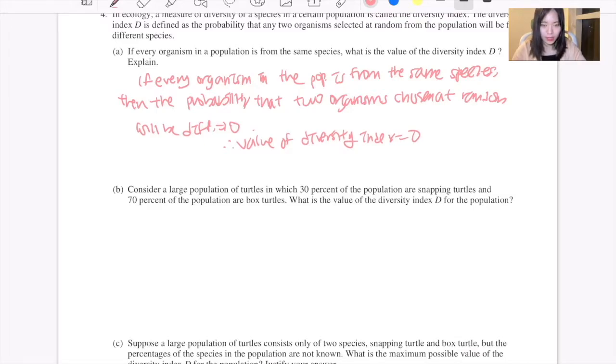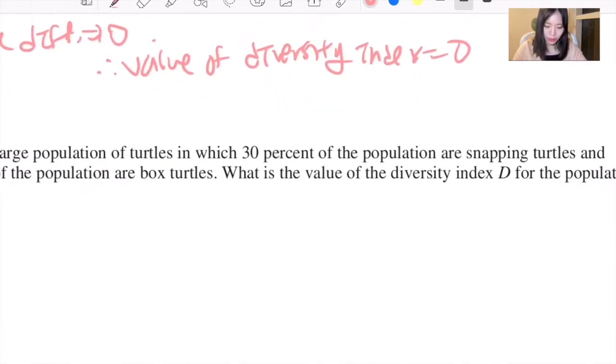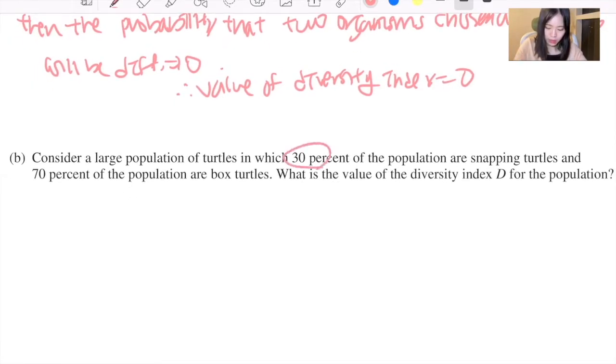Well, the diversity index is the probability that when two turtles are chosen at random from the population they are different species, which is the probability that the first turtle is a snapping turtle and the second turtle is a box turtle, or vice versa. So the first turtle would be a box turtle and the second turtle would be a snapping turtle.